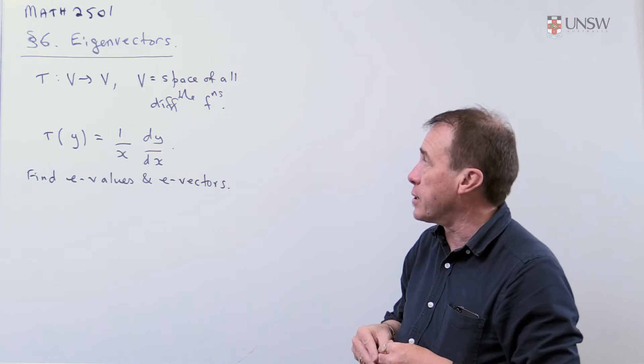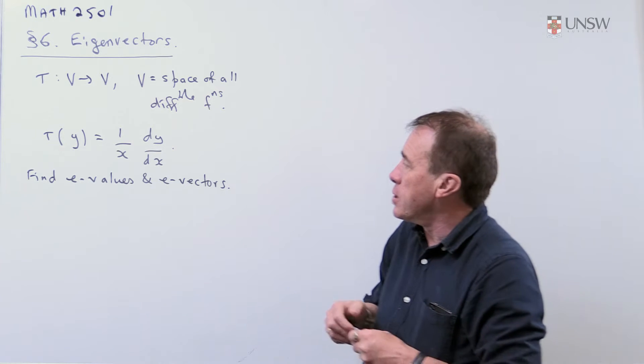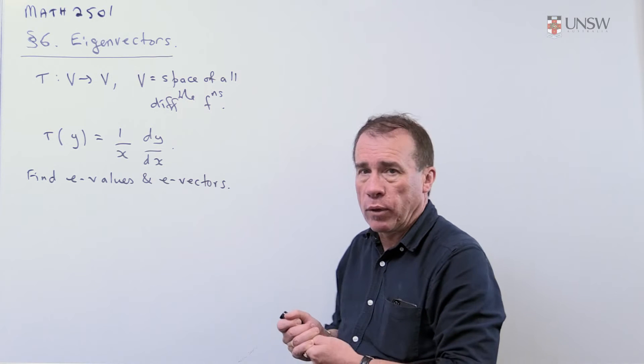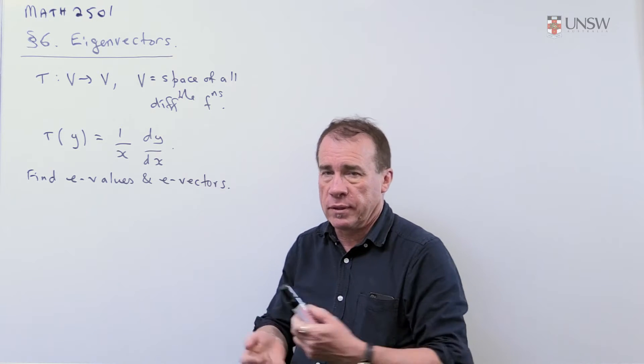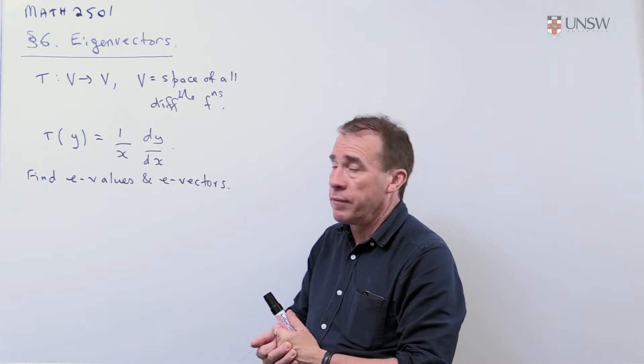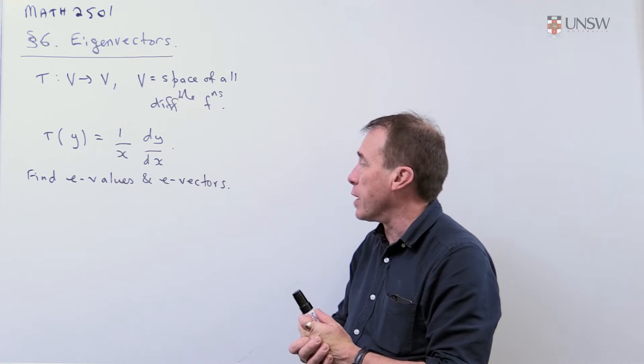This is number 2501, and I'm just going to do one final example on these eigenvectors from chapter 6. In this case, it's a more abstract problem. Normally we're working with vectors in R^N for various small values of N. Here we're looking at the space of all differentiable functions.